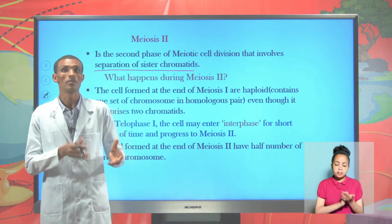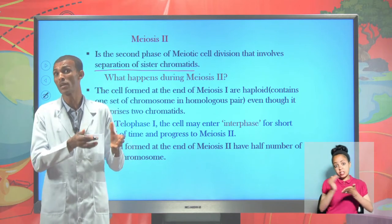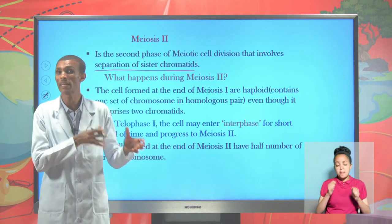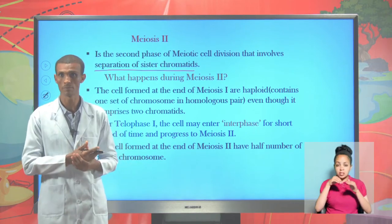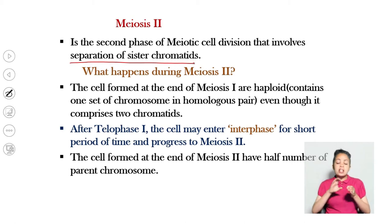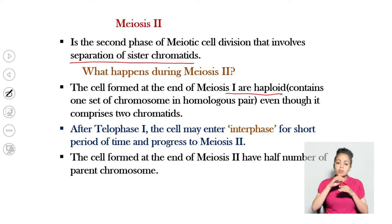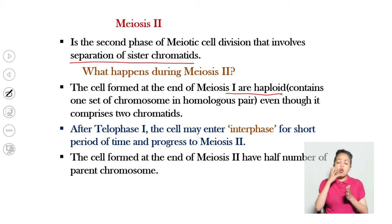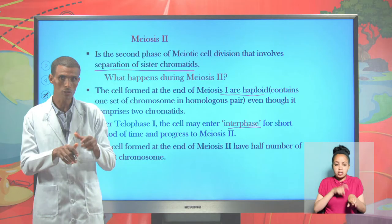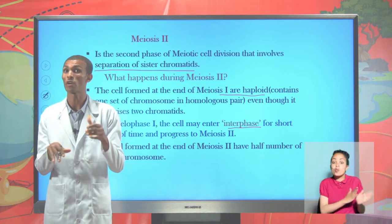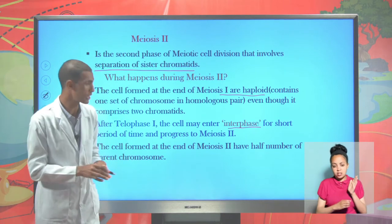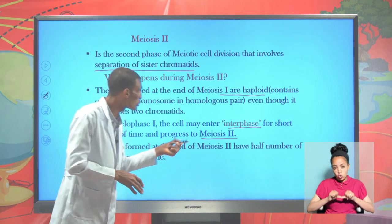The activities that take place during meiosis II depend on the activities that take place during meiosis I. The cell formed at the end of meiosis I is haploid because it contains one set of chromosomes. This N number produced at the end of meiosis I enters a short period of time because it is ready for the next phase. Then the activity continues to meiosis II.